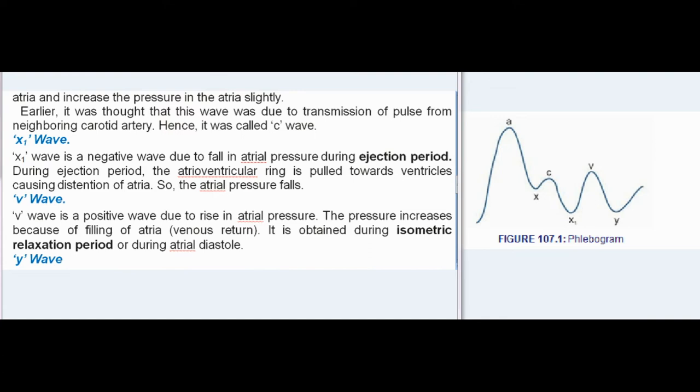X1 wave: X1 wave is a negative wave due to fall in atrial pressure during ejection period. During ejection period, the atrioventricular ring is pulled towards ventricles causing distension of atria. So, the atrial pressure falls.